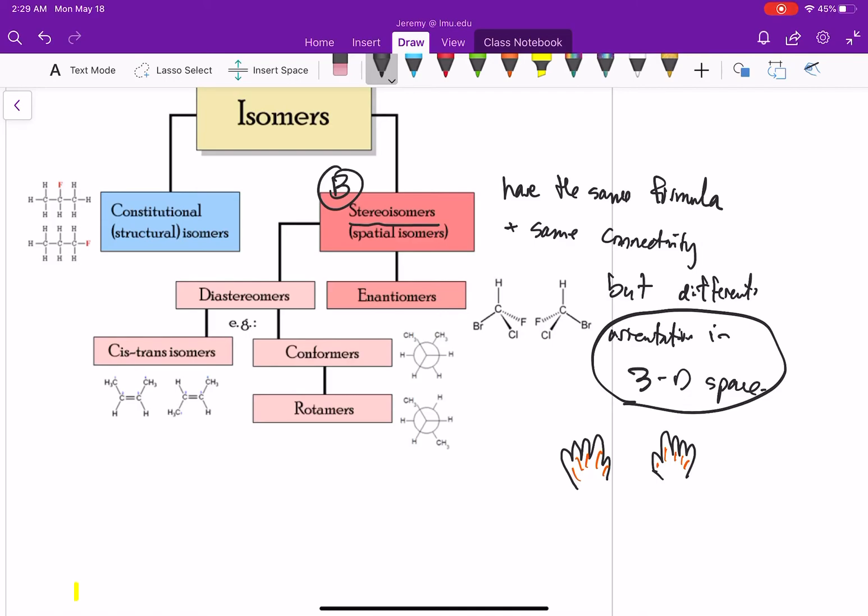And then stereoisomers can really be subdivided into two categories. We can have diastereomers, or we can have enantiomers. Diastereomers or enantiomers. So these are two definitions we're going to have to learn, and we'll be learning what these mean in subsequent videos.